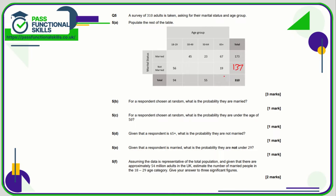This missing number is 67 plus 19, which is 86. This missing number is 55 minus 23, which is 22. For the remaining category, I can work out the row total first: 310 minus 86 minus 55 minus 94 is 75. So the missing value in that box is 75 minus 45, which is 30, and another value is 94 minus 56, which is 38.